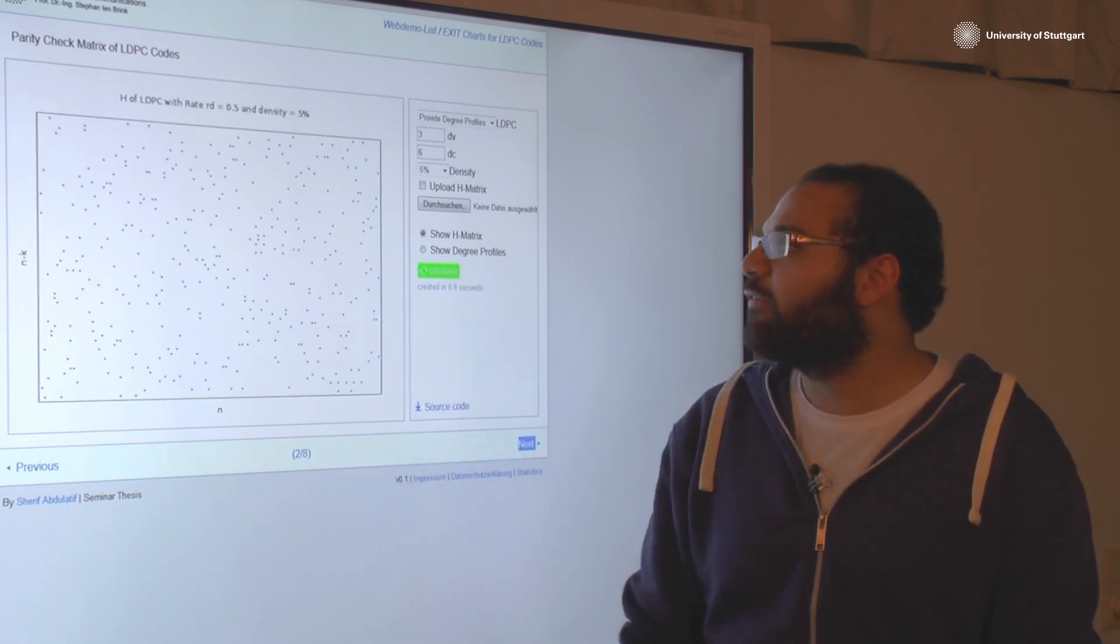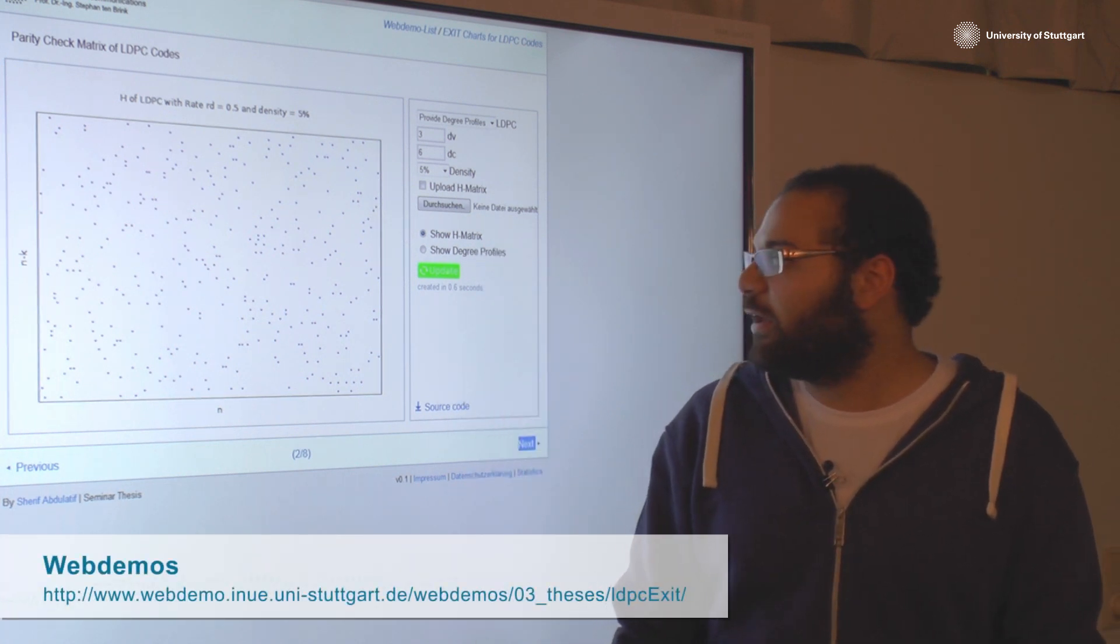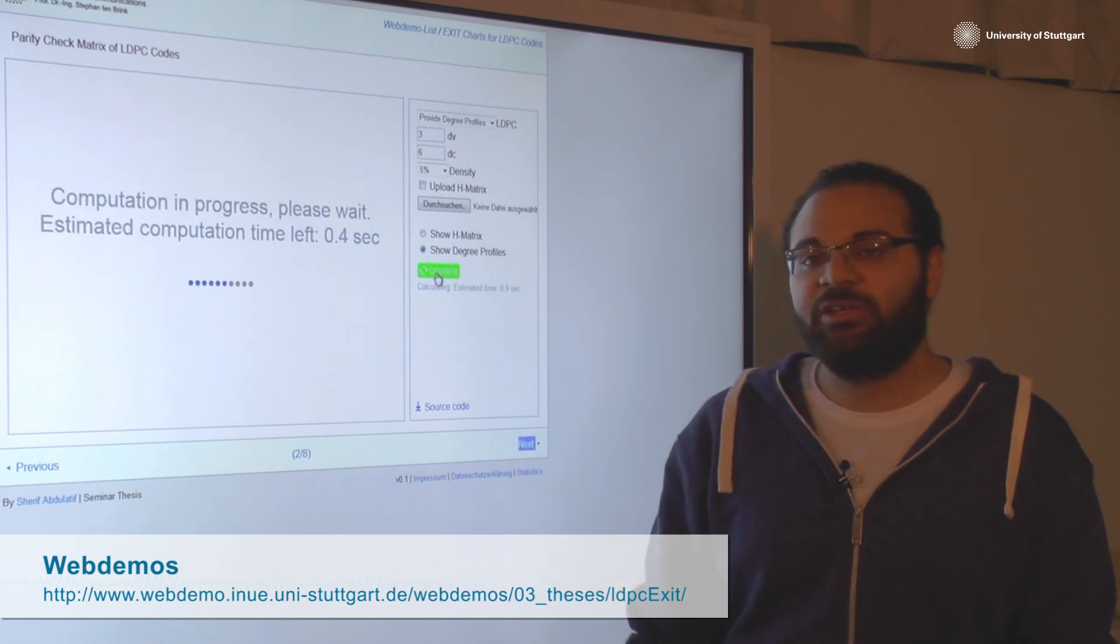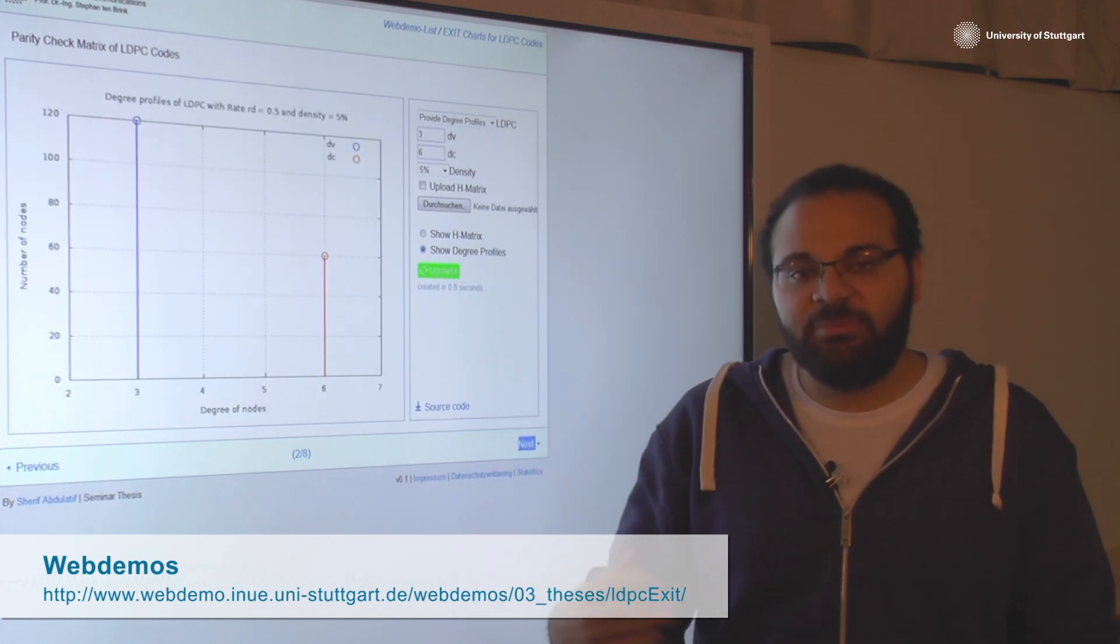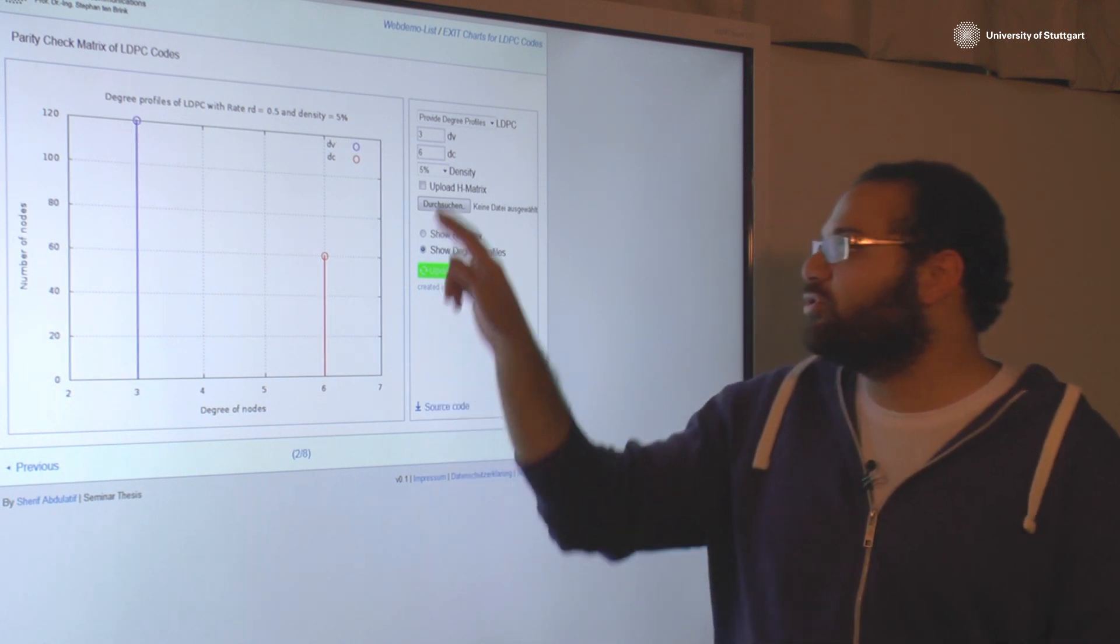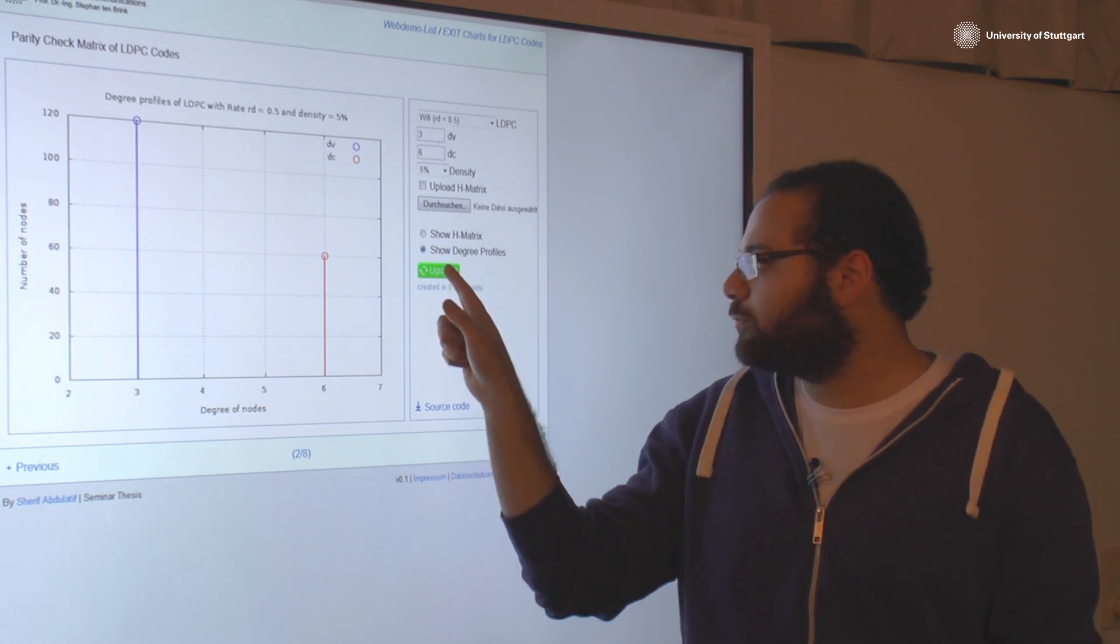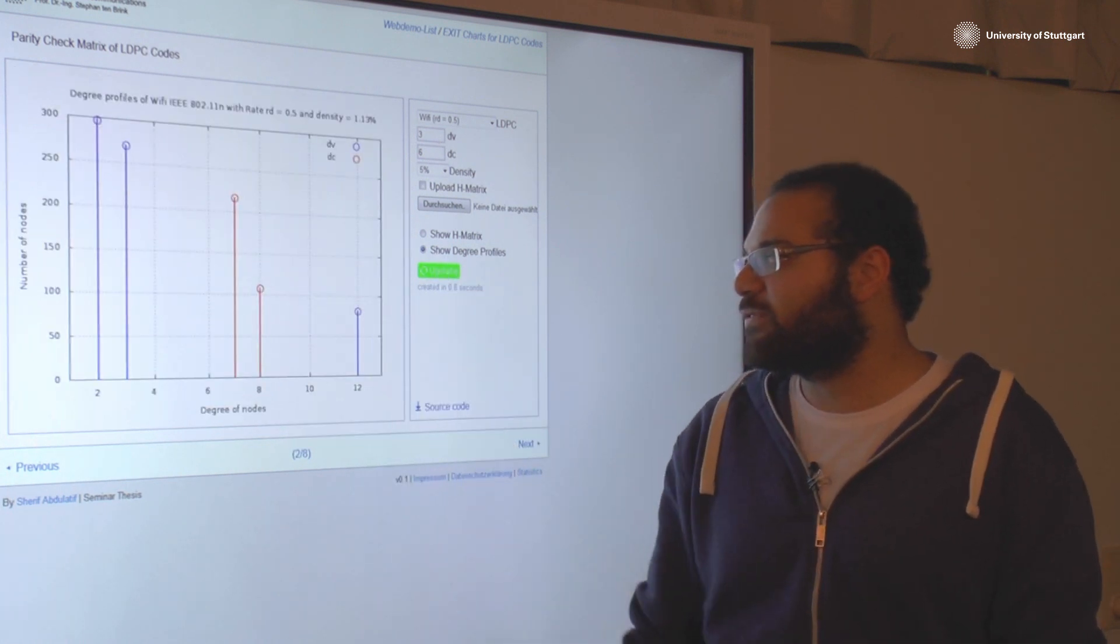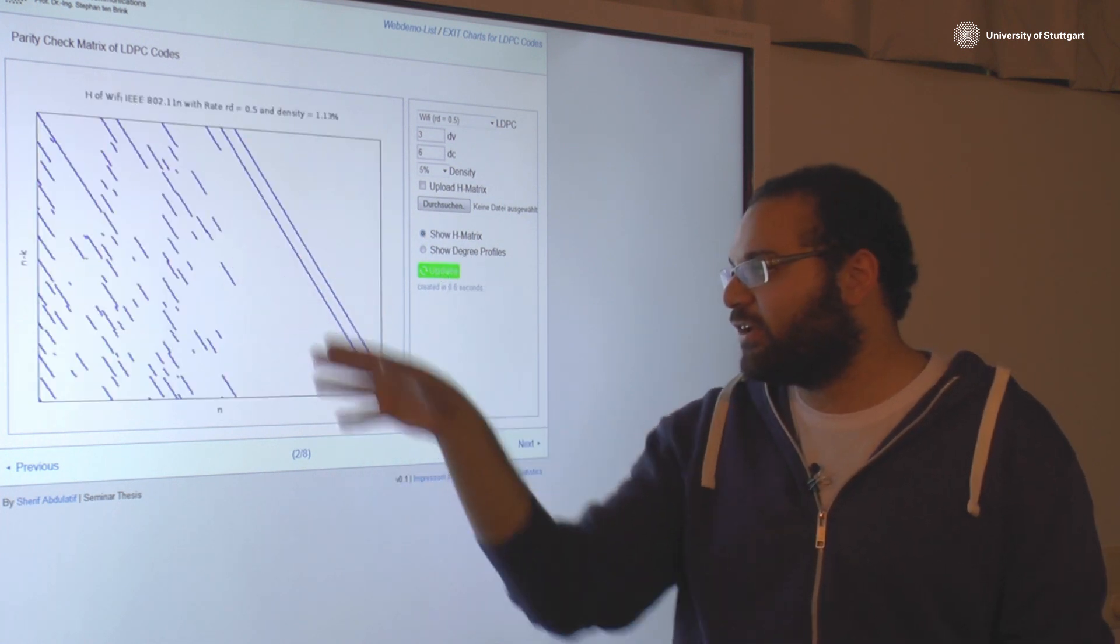We have less than ST and you can upload your own H matrix. You can also show the degree profile from here and you can also have some famous codes which you can visualize like the Wi-Fi. Here is the degree profiles of the Wi-Fi and here we can see the famous Wi-Fi H matrix.